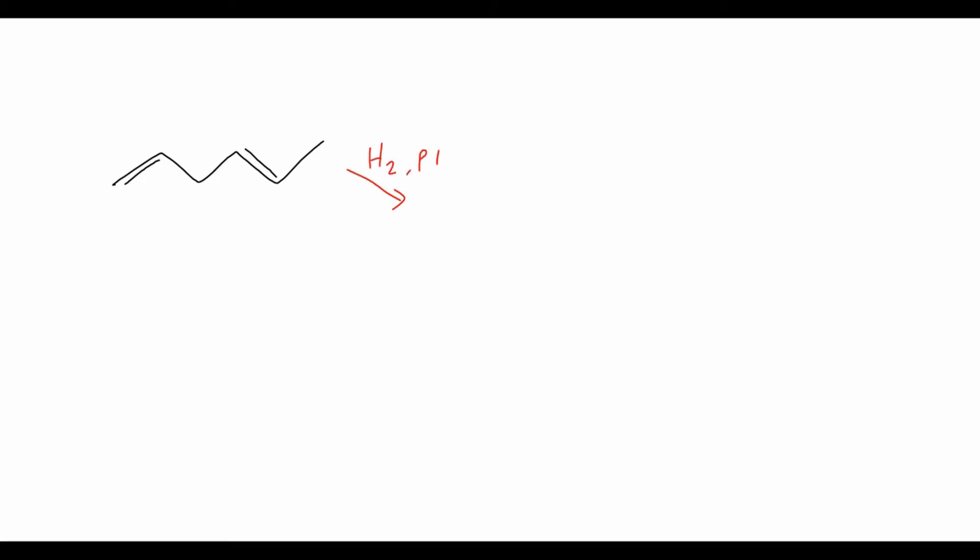So what does this conjugation actually do for us? We can measure the stability of alkenes using their heats of hydrogenation. If we take two different alkenes — first, 1,4-hexadiene — we have six carbons and two double bonds that are not conjugated, so they're separated by more than one single bond. If we put this in a reaction with hydrogen gas along with a palladium on carbon catalyst, we will produce the hydrogenated alkane, just hexane.